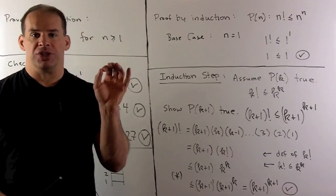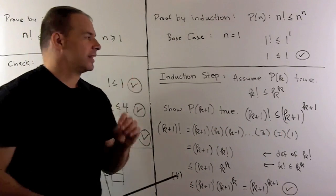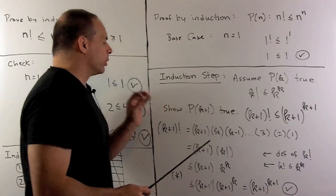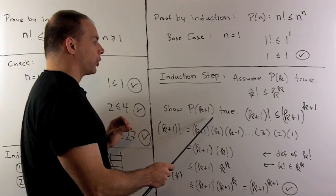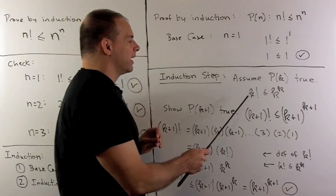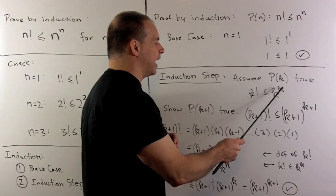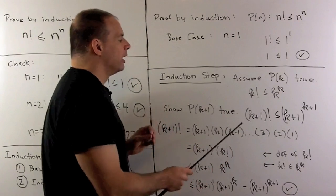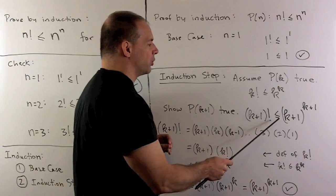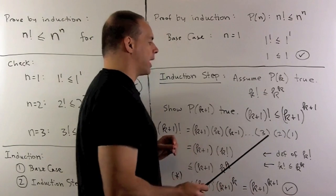Now, for our induction step, we're going to assume that the kth statement's true. And using that, we want to prove that the k plus first statement's true. So we're assuming that k factorial is less than or equal to k to the kth power. I want to show k plus 1 factorial is less than or equal to k plus 1 to the k plus first power.